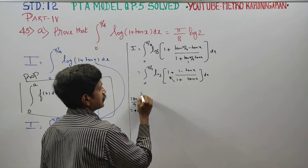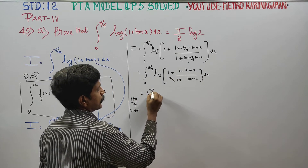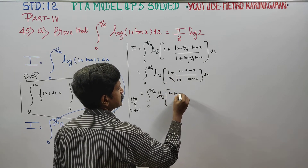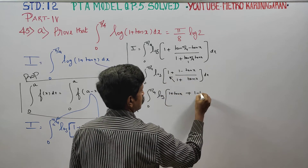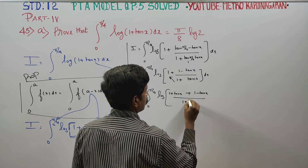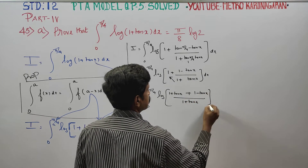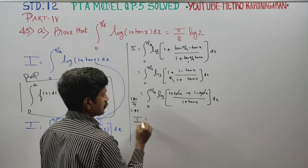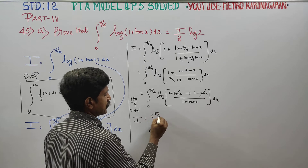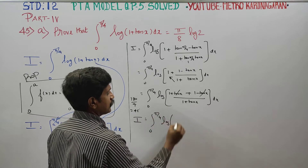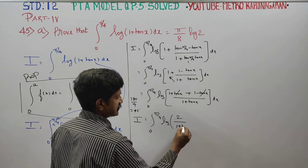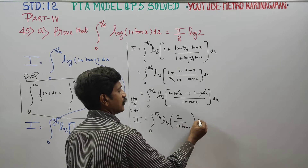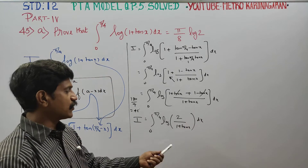Cross-multiplying the expression inside the logarithm: I = ∫₀^(π/4) log((1 + tan x + 1 − tan x) / (1 + tan x)) dx. The tan x terms cancel, leaving I = ∫₀^(π/4) log(2 / (1 + tan x)) dx.